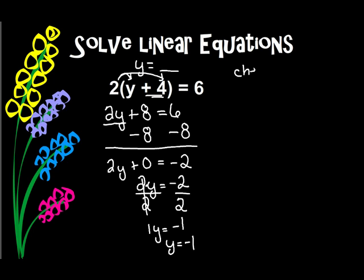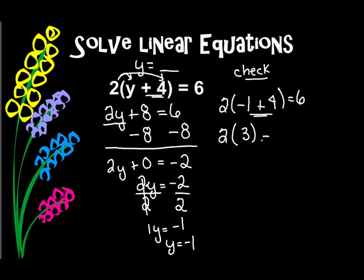Now, let's make sure that I'm correct — we're going to check this. So I'm going to write the equation: 2 times, I'm going to leave a space for my y, plus 4, and that should equal 6. Well, my y is negative 1, so I'm going to put negative 1 in there. We're going to follow the order of operations, so I have to do what's in parentheses first. So I'm going to have 2 times (negative 1 plus 4) is 3. And that, if we're correct, should equal 6. Well, 2 times 3 is 6. Since 6 equals 6, I know I did it right, and this is the solution.